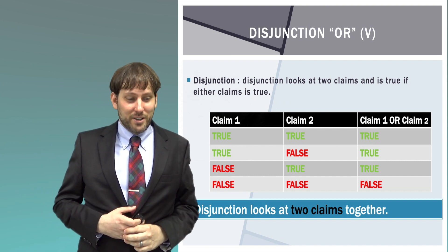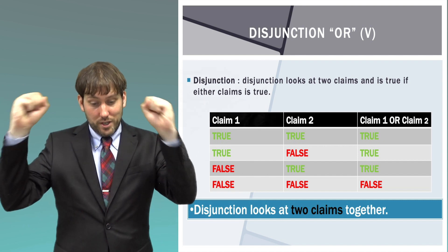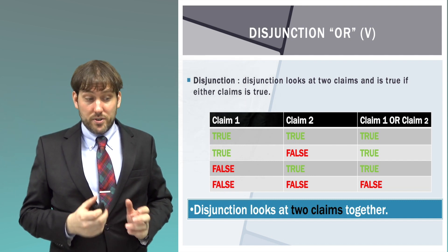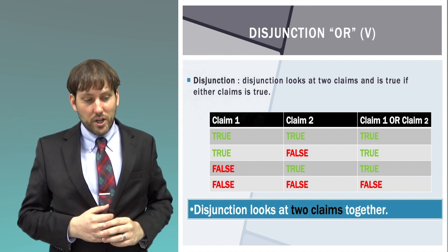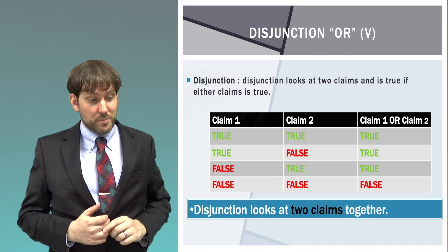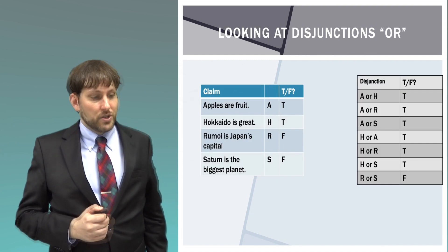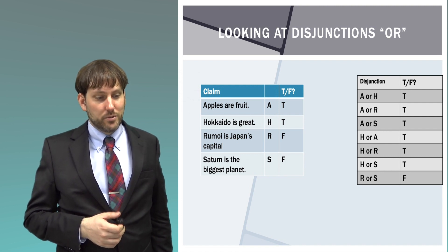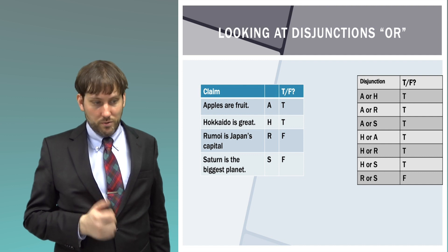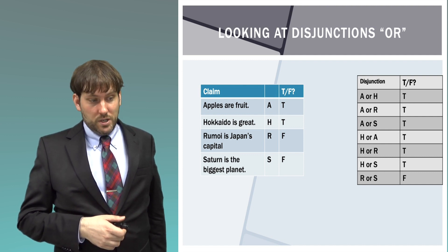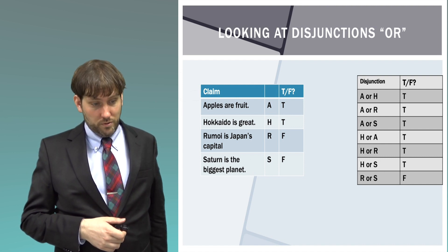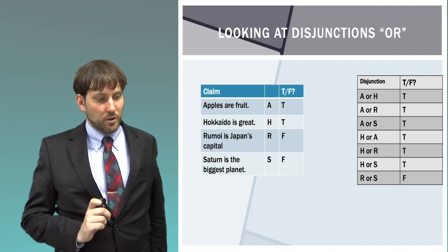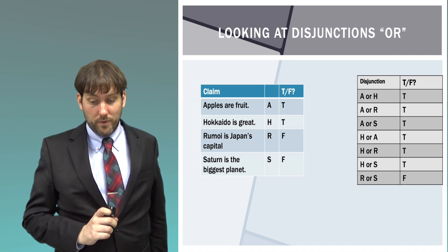Disjunction means or. A disjunction looks at two claims. If either claim is true, it's true. So if claim one is true, it's true; if claim two is true, it's true. If both claims are false, it's false. So a disjunction is true if either of the claims is true — true when both are true, true when one is true. It's only false when both are false. For example: apples are fruit or Hokkaido is great — true. Apples are fruit or Rumoi is Japan's capital — true. The only false case: Rumoi is Japan's capital or Saturn is the biggest planet — false or false, so false.